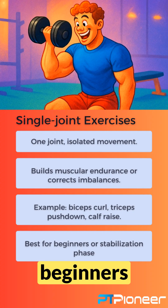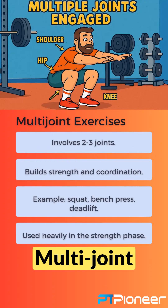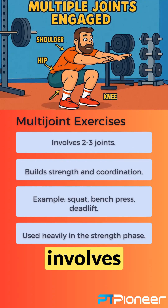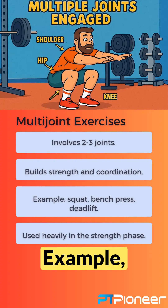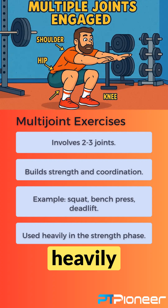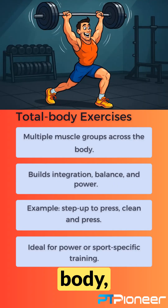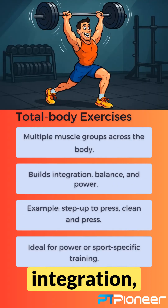Best for beginners or the Stabilization Phase. Multi-Joint: involves 2–3 joints, builds strength and coordination. Examples include the Squat, Bench Press, and Deadlift. Used heavily in the Strength Phase.